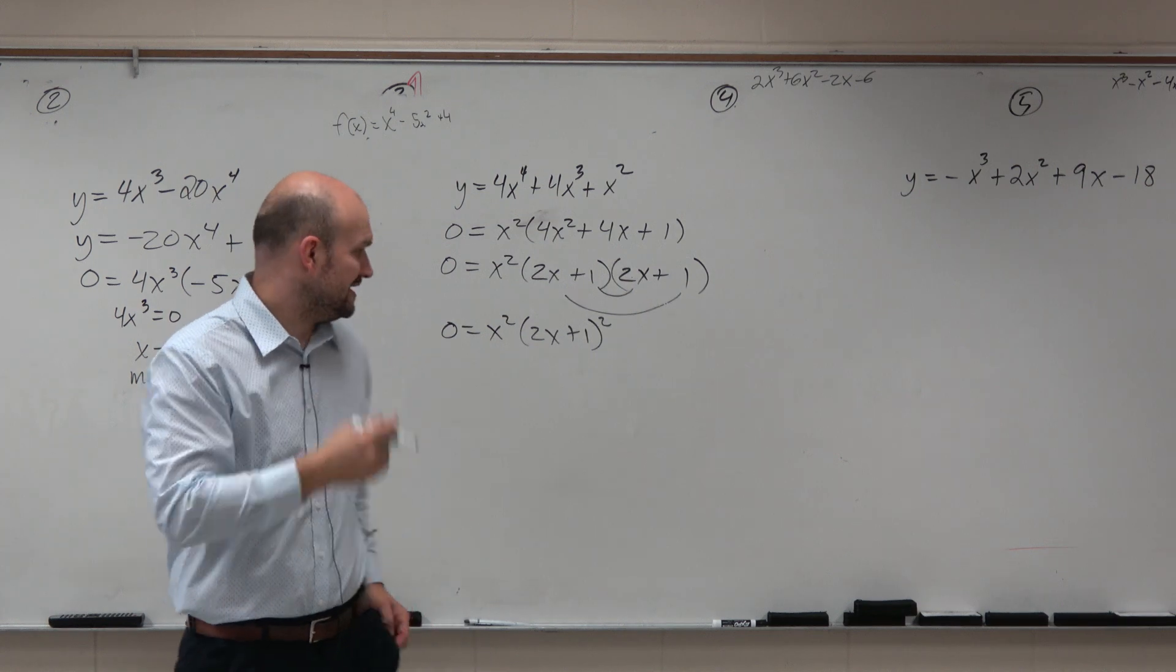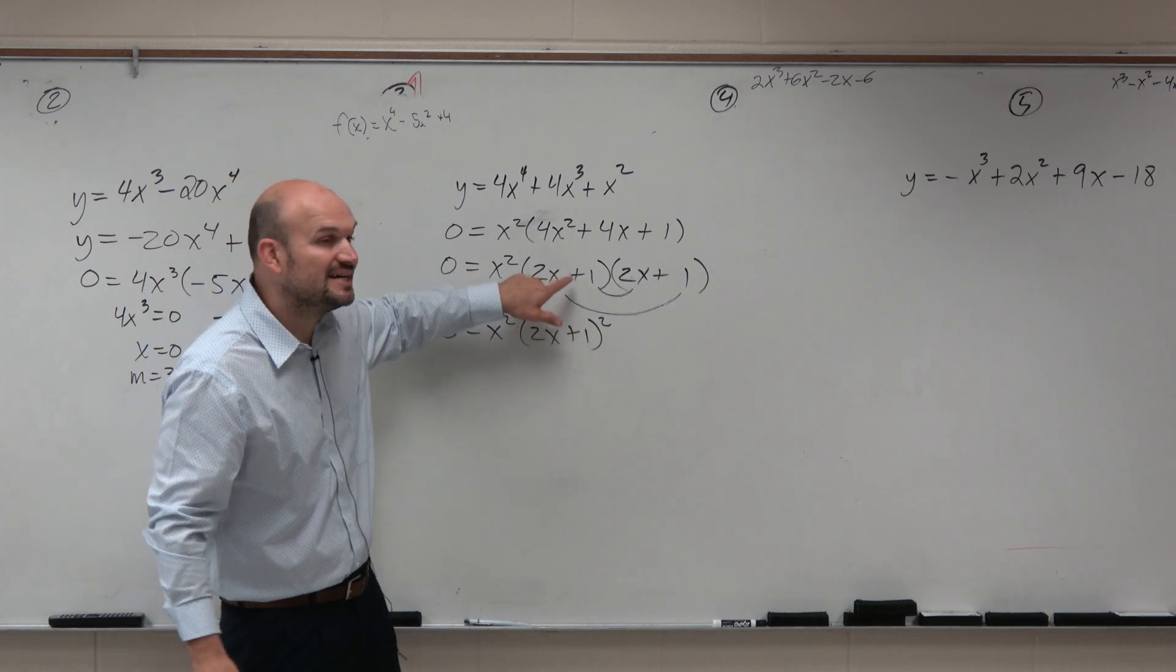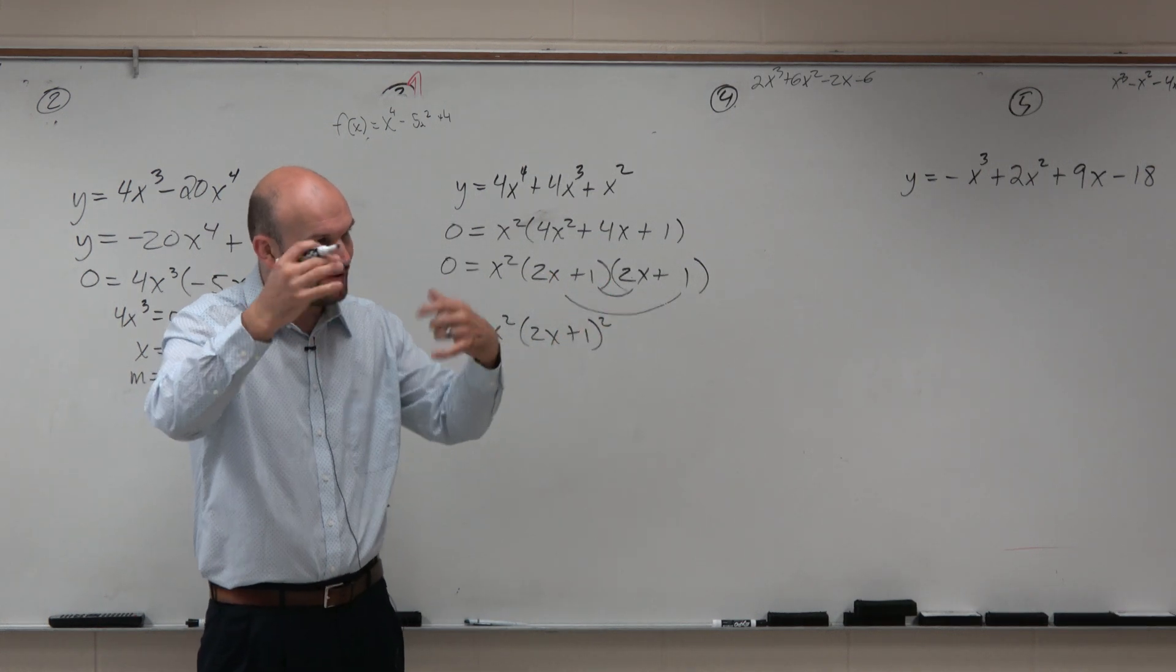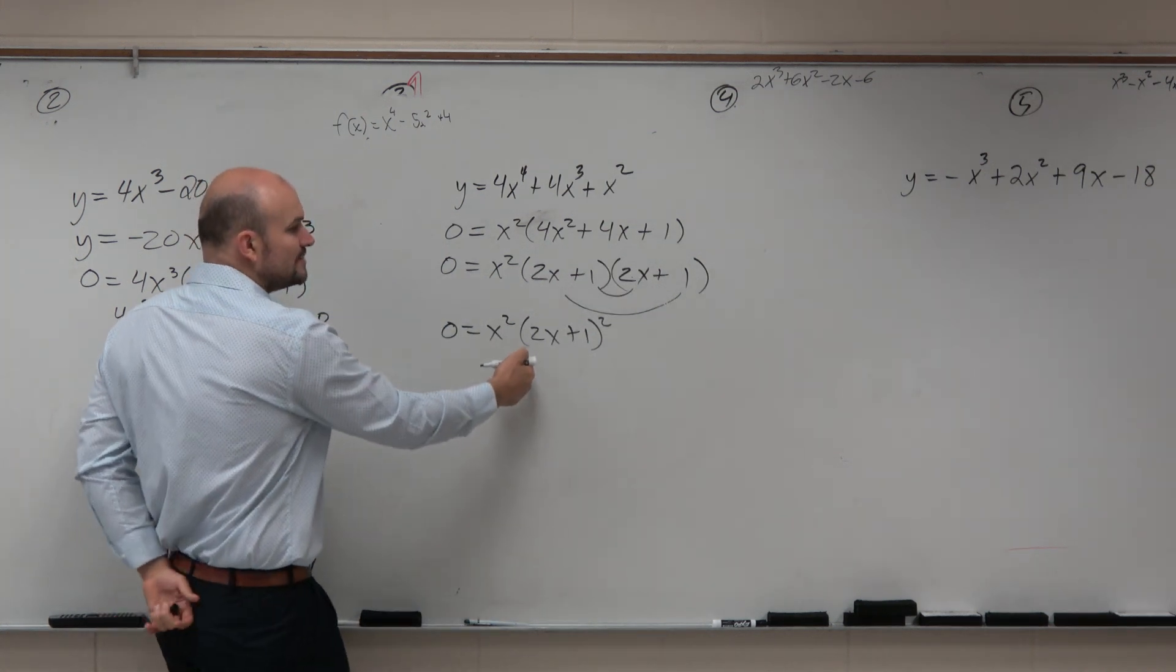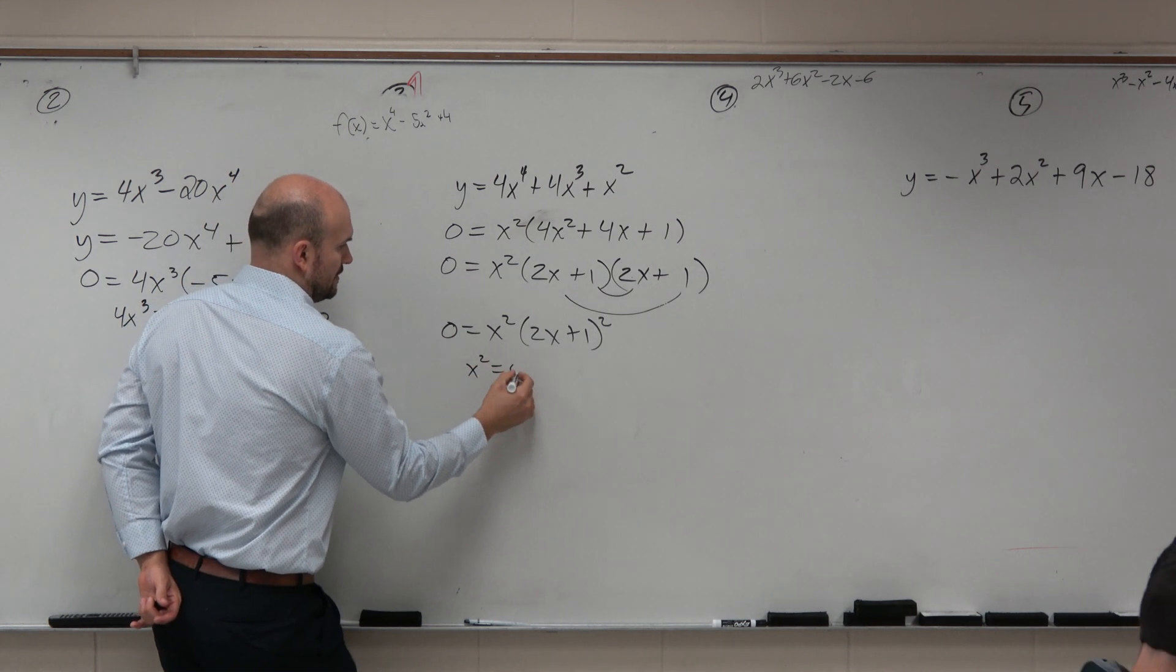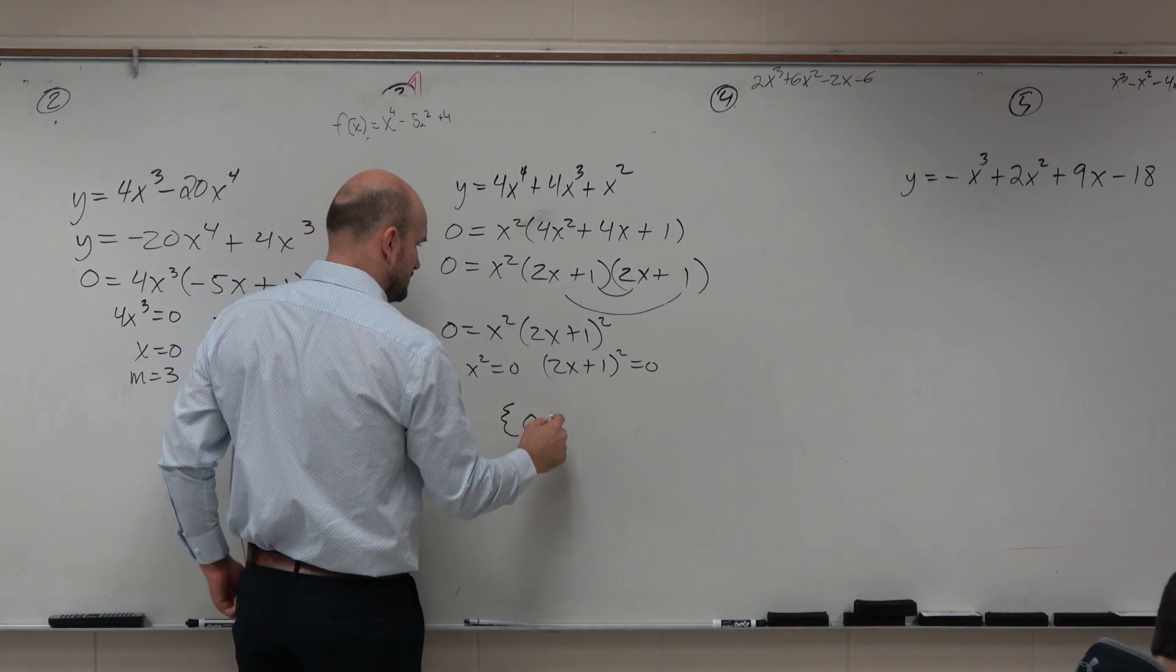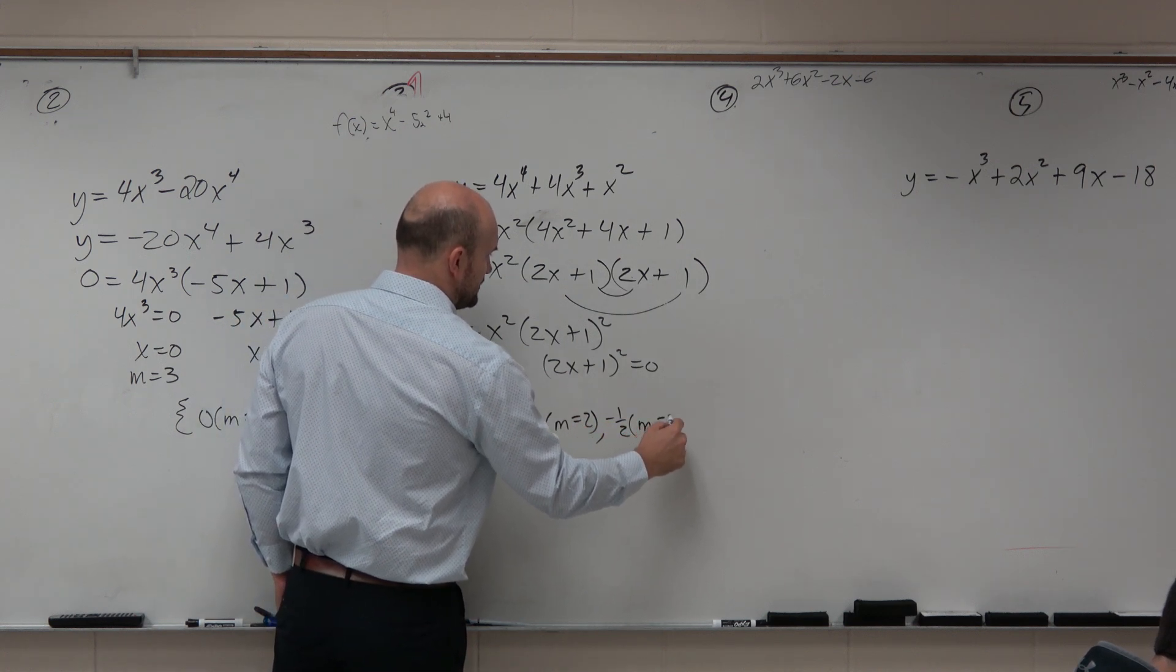Oh, that tells me whatever that 0 is, is going to have a multiplicity of 2, right? Because it's repeated. That's what multiplicity is. It's just a repeated 0. You can't do two x-intercepts at the same spot. When you have a repeated 0, it just changes the behavior of the x-intercept. So now, we could set these both equal to 0 and solve. And hopefully, you guys would agree that my zeros are going to be 0, which is a multiplicity of 2, and -1/2, which is a multiplicity equal to 2.